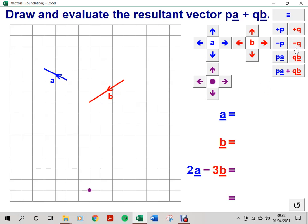Now I'm going to ask my pupils, can you draw and evaluate the resultant vector 2A subtract 3B by algebraic and geometric methods? Let's perform the calculation first to find the resultant vector in column vector form.